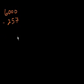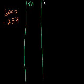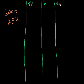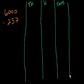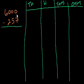I'm going to do it the Singapore math way. So this is the thousands place, this is the hundreds place, this is the tens, and this is the ones. When we subtract, we want to see if the number above is greater than the number below. Well, 0 is not greater than 2, 0 is not greater than 5, and 0 is not greater than 7. So we have an issue.